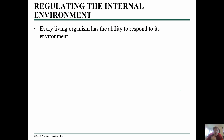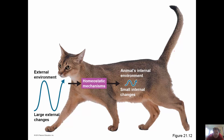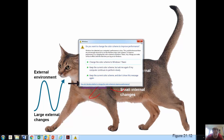Homeostasis is the body's tendency to maintain relatively steady conditions in its internal environment while exchanging with the external environment — that's kind of the definition of life, where we're able to do stuff and not just let stuff happen to us. The internal environment of vertebrates is what we call the interstitial fluid, which fills the spaces between our cells. The external environment can change greatly, but our internal environment, where organs are optimized to perform certain physiological functions, remains the same.